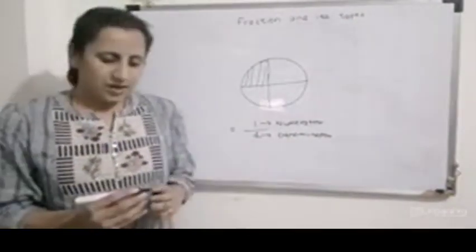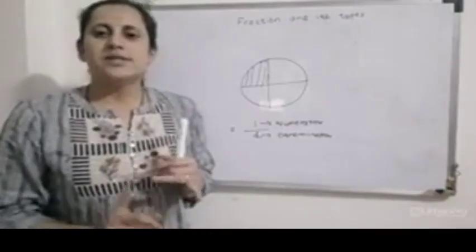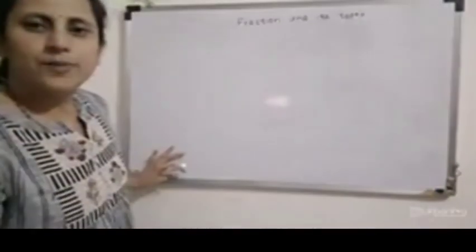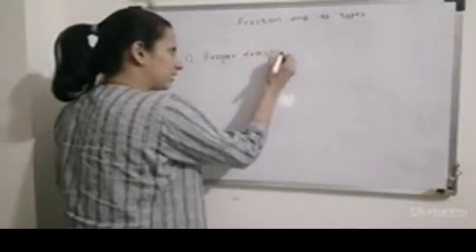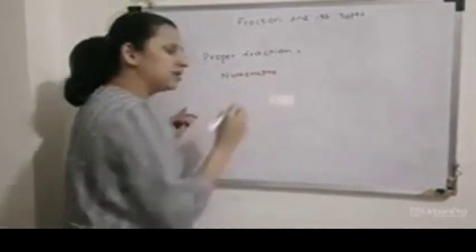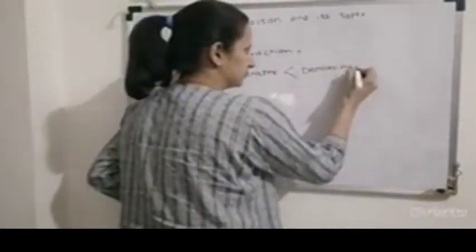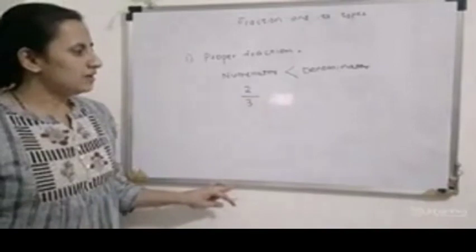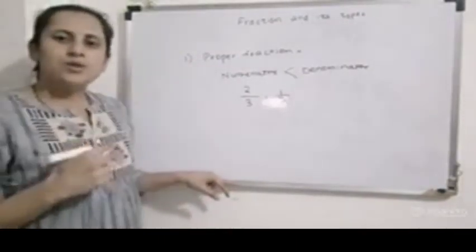Now we will see some types of fractions. First is proper fraction, second is improper fraction, and third is mixed fraction. So what is a proper fraction? Proper fraction means when the numerator is less than the denominator. For example, 2 by 3 or 1 by 5 — these are proper fractions.